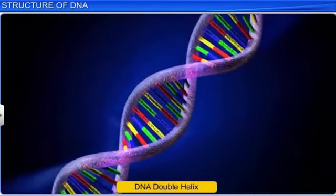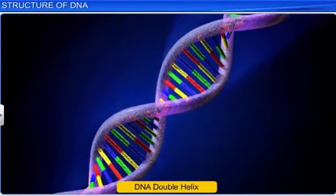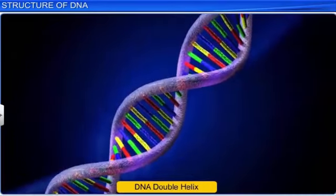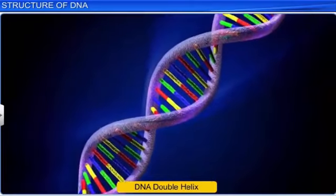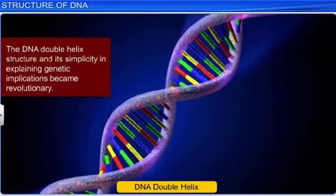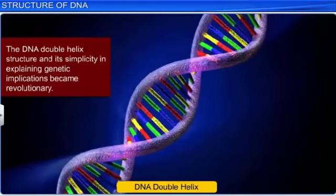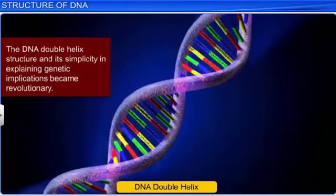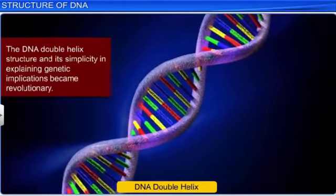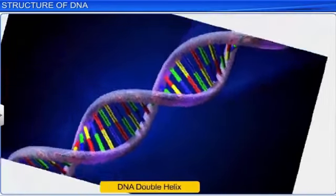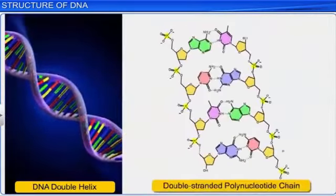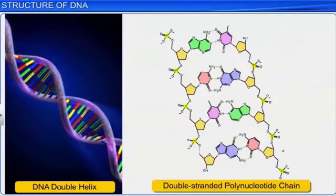Thus, these discoveries provided a clearer picture of the genetic implications of the DNA structure, and soon the DNA double helix structure and its simplicity in explaining genetic implications became revolutionary. Let us now learn about the chemical structure of a polynucleotide chain present in the DNA double helix structure.